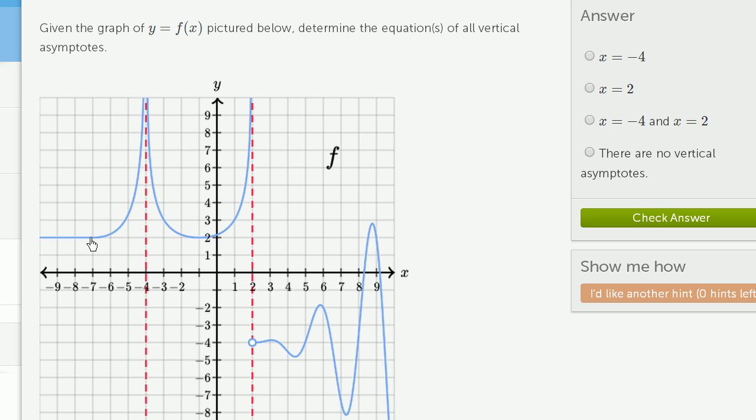At x equals negative 4, as we approach it from the left, the value of the function becomes unbounded right over here. It looks like as we approach x equals negative 4 from the left, the value of our function goes to infinity.